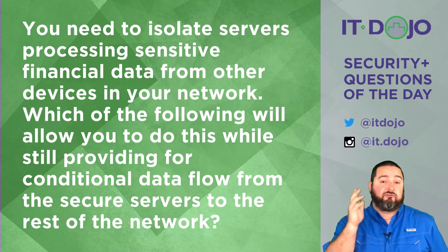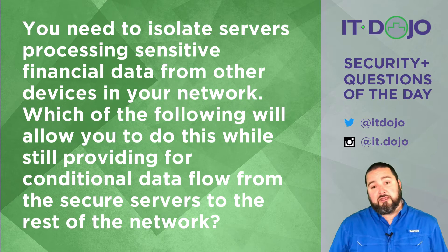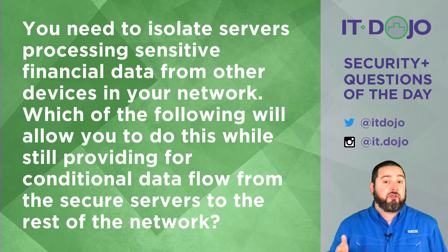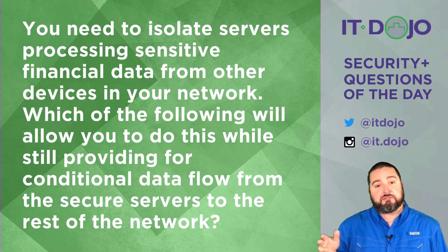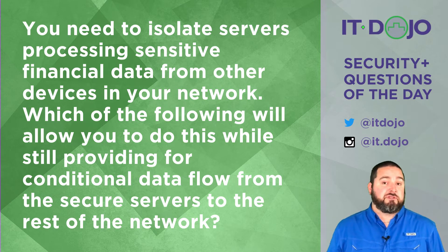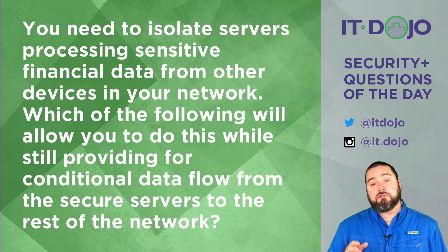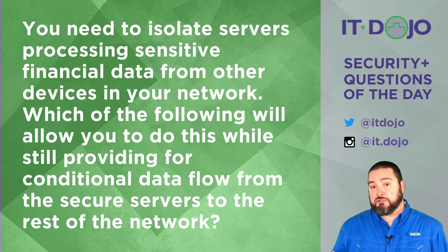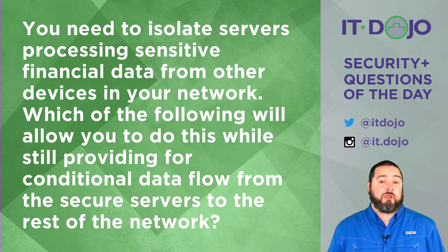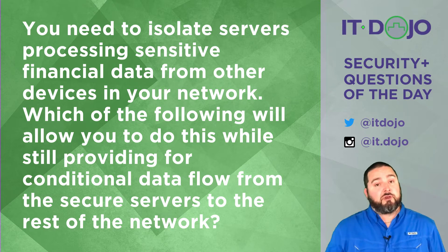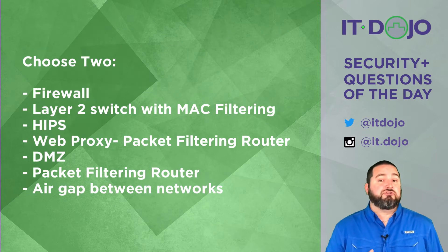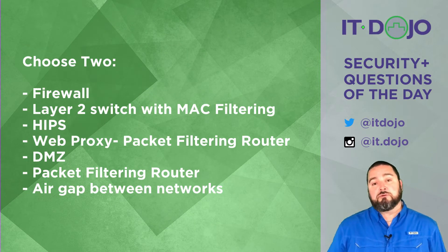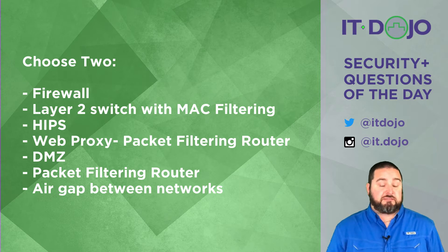Alright, my first question for you today: you have servers that process some sensitive financial information and you need to segment those particular servers from the rest of the network. However, you still need to allow, under certain conditions, the flow of information from those servers to other areas of your network. Given this list of choices, which could you implement to accomplish that — providing both isolation and the actual flow of data?